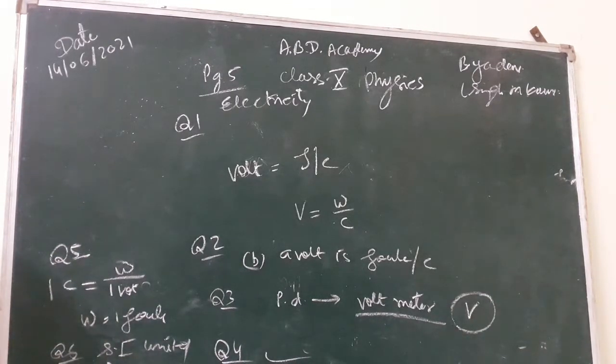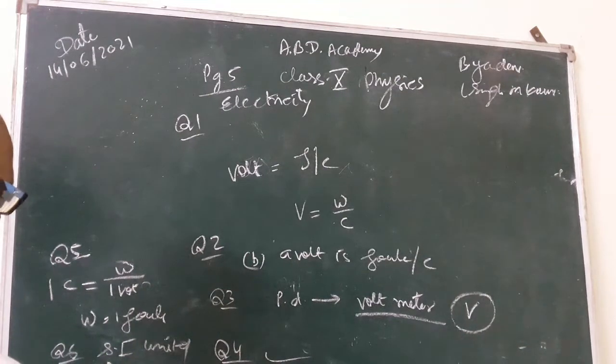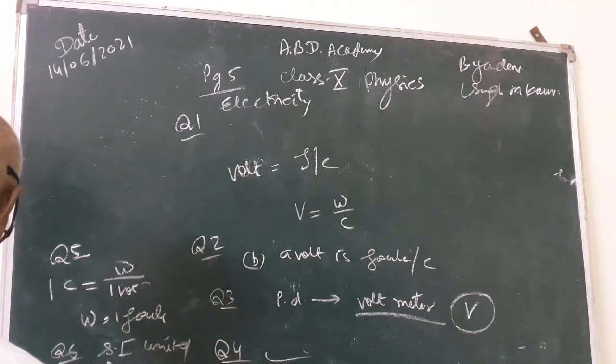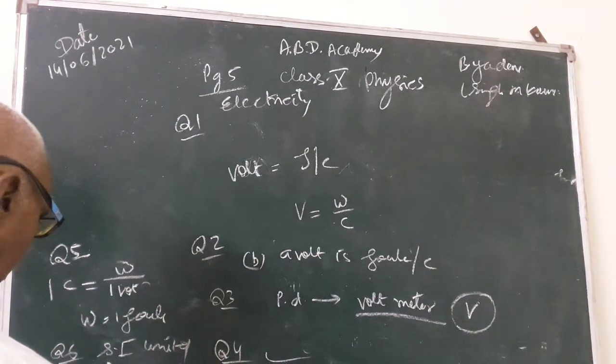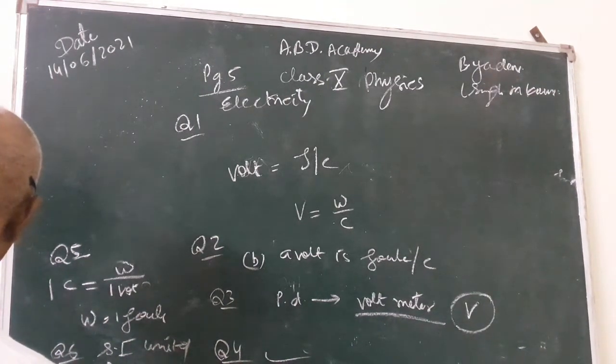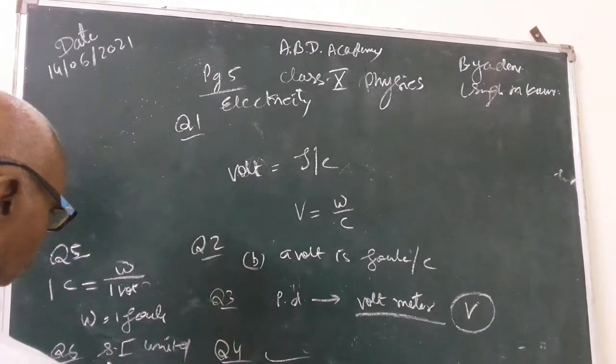Question 6. SI unit of potential difference is volt. Question 7 how much work is done in moving charge of 2 coulomb across 2 points having potential difference of 12 volt. This is work done is equal to V into C that is 24 joule. V is 12 volt and charge is 2 coulomb so it is 24 joule.